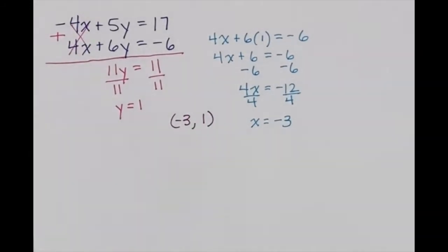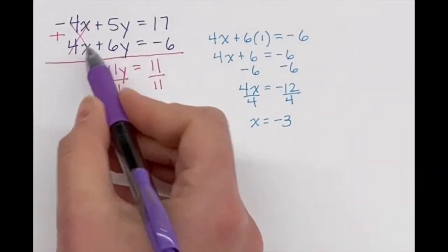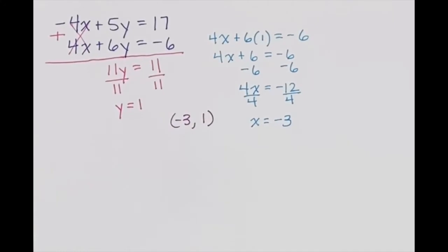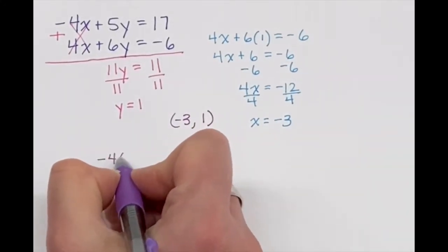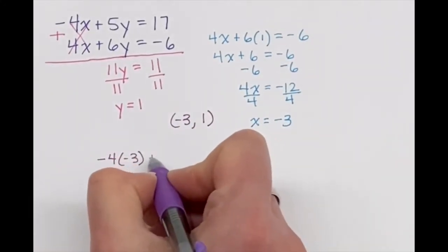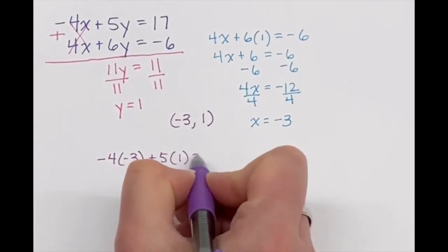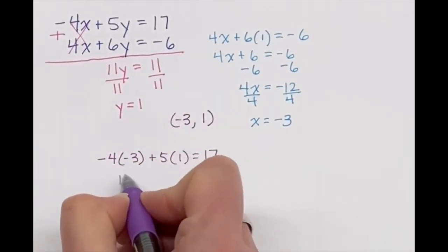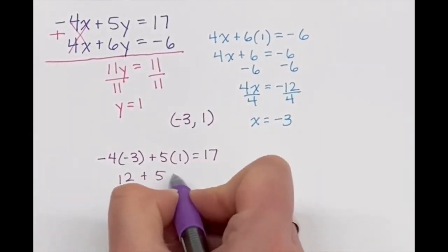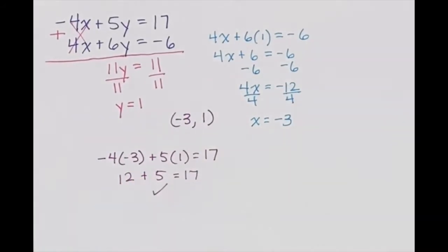Don't forget your double check. Plug this answer into both of the equations just to see if you have the right answer. Negative 4 times negative 3 plus 5 times 1 is equal to 17. 12 plus 5 is equal to 17. You bet it is.